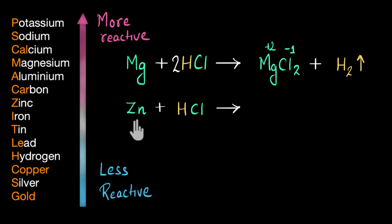That means, zinc will displace hydrogen from its chloride and form zinc chloride. And hydrogen gas will be evolved out over here. So the products will be zinc chloride, which is a salt, and hydrogen gas will be evolved.